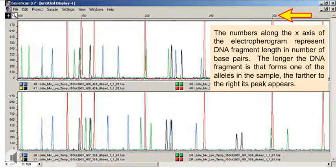The numbers along the x-axis of the electropherogram represent DNA fragment length in number of base pairs. The longer the DNA fragment is that forms one of the alleles in the sample, the farther to the right its peak appears.